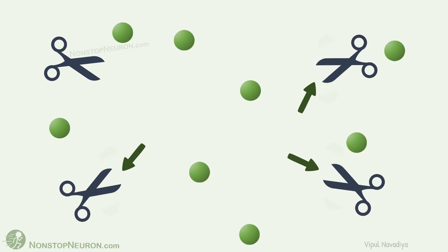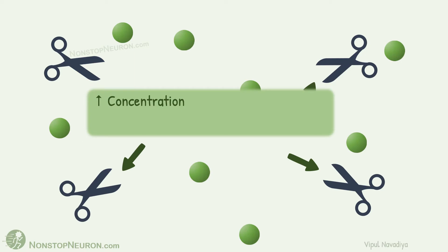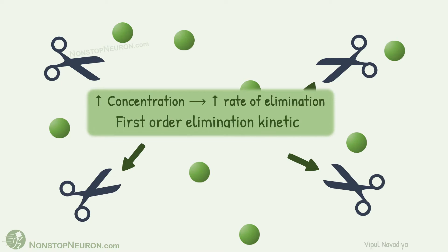So, more drug is degraded as compared to at lower concentration. Thus, with increasing drug concentration, rate of elimination of drug increases. Such kinetics where rate of elimination is directly proportional to the concentration of drug is called first order elimination kinetics. I hope this concept is clear to you because this single point explains all the characteristics of first order kinetics that we will be studying soon.